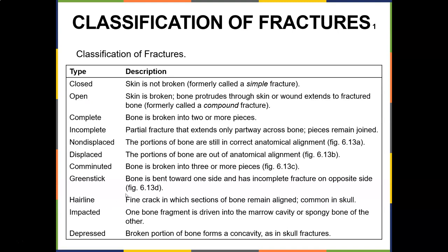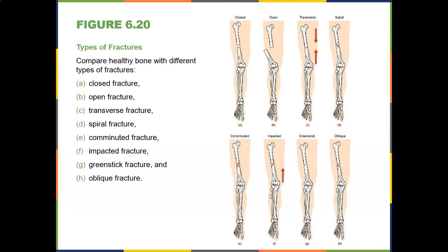A greenstick fracture is when bone bends to one side — like breaking a soft stick where the middle remains intact. An impacted fracture is when one bone fragment is driven into the marrow cavity or spongy bone of the other — difficult to heal. A depressed fracture is when broken bone forms a concavity, as in skull fractures — like being struck with a baseball bat.